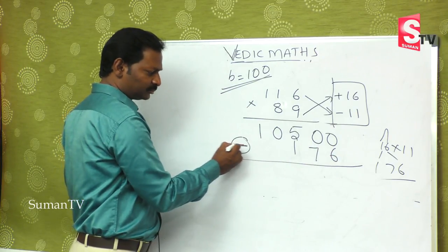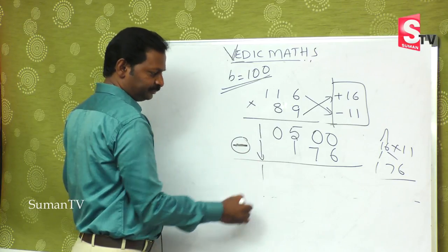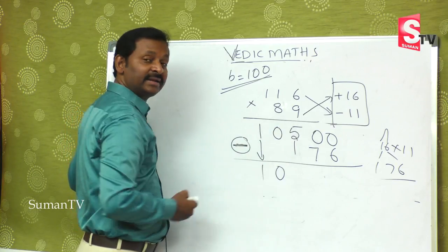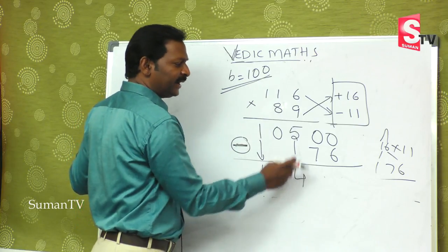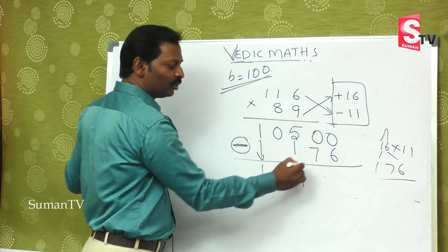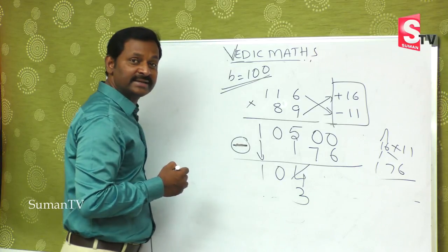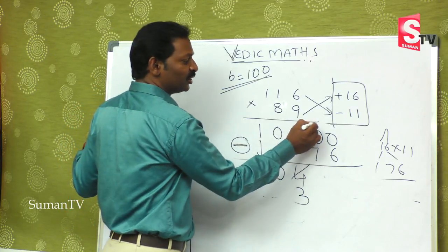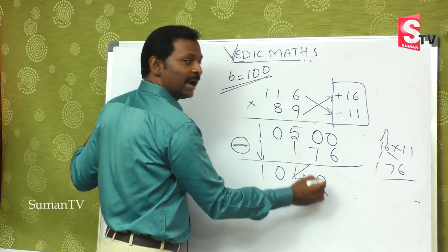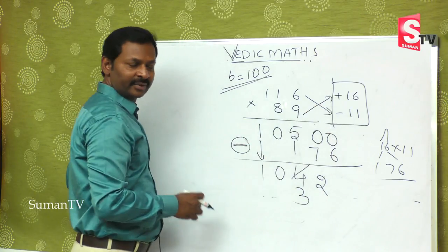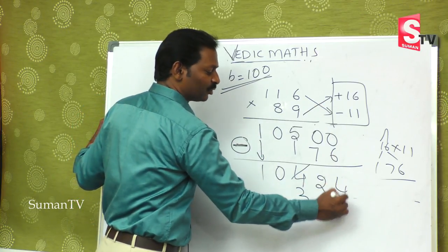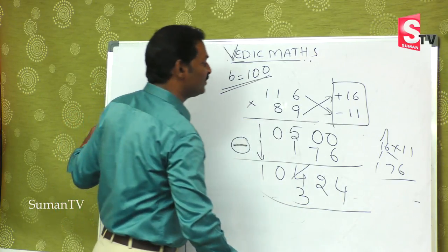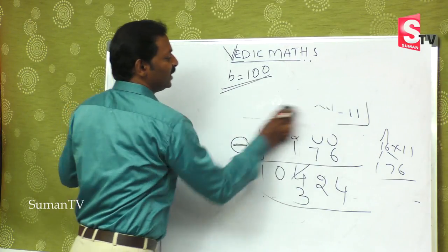What we do now: minus 176 from 10500. 1 remains 1, 0 remains 0, 5 minus 1 is 4. Now we use base complement method. Take the complement: 10 minus 7 is 3, 10 minus 6 is 4, giving us 10324, which is the right answer.